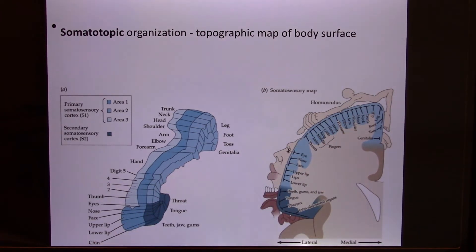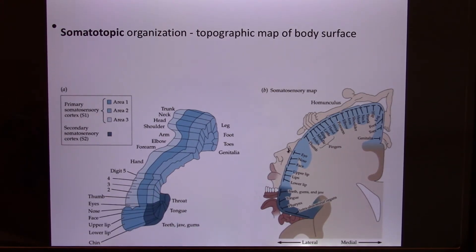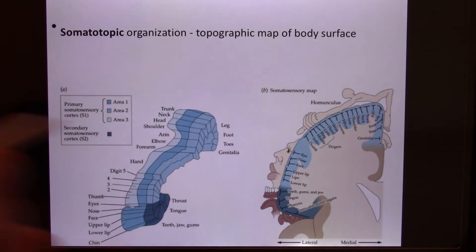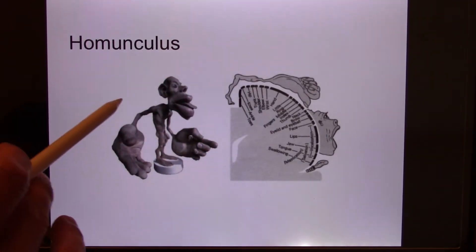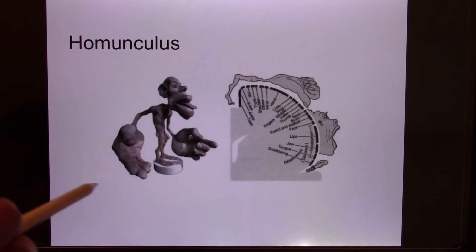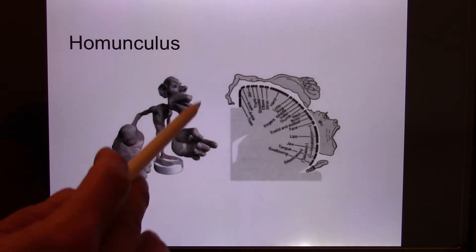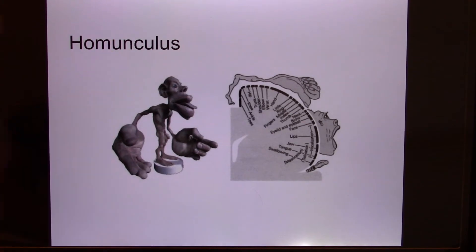Your finger, your face, especially your lips — each neuron there has a pretty small receptive field, so their resolution is higher. And if you draw your body based on the number of neurons, it's going to look like the homunculus. It tells you the very sensitive parts are the hand, the face, especially the lips. We covered all this in the central nervous system.